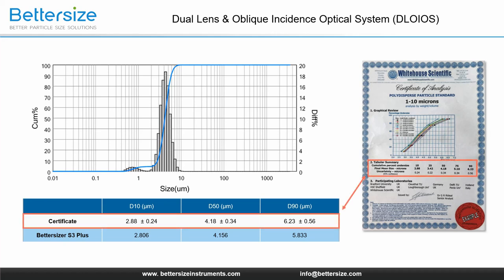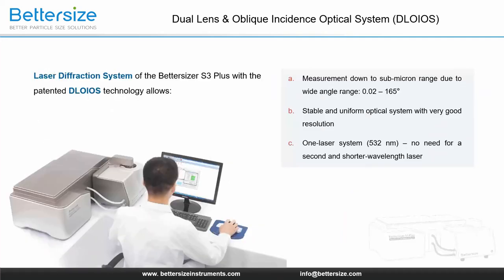DLO iOS technology allows very accurate results for standard samples. In summary, due to the patented DLO iOS technology in combination with a high-resolution detector system, the Betasizer S3 Plus compensates for the great disadvantage of the conventional Fourier setup and even increases the precision for small particles in comparison to the inverse Fourier setup, therefore allowing precise measurements and a stable, uniform optical system.